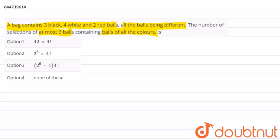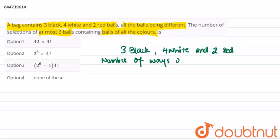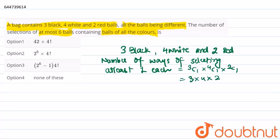So we have been given that there are three black balls, four white balls and two red balls. Number of ways of selecting at least one each can be written as 3C1 into 4C1 into 2C1, that is 3 into 4 into 2 equal to 24 ways.